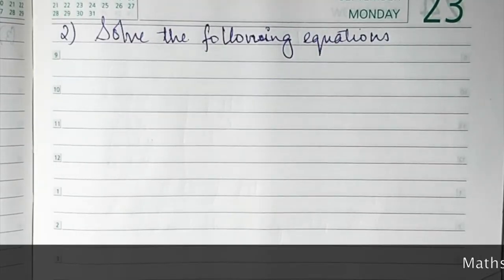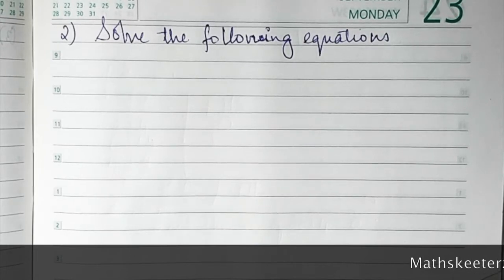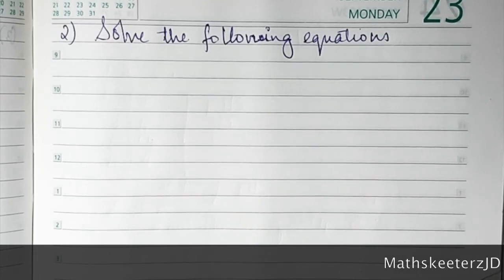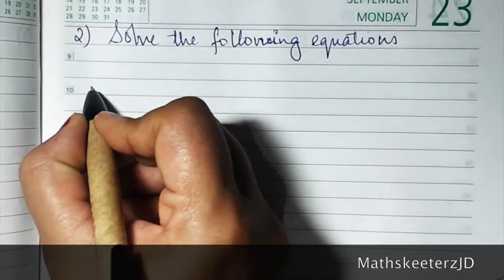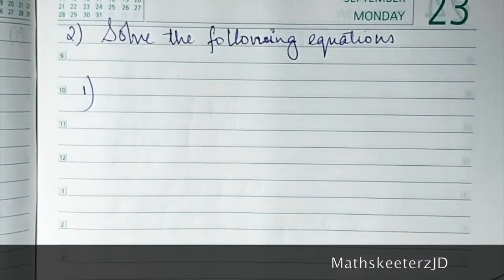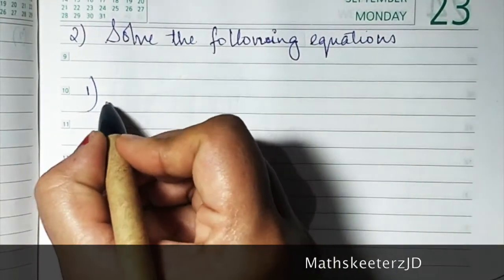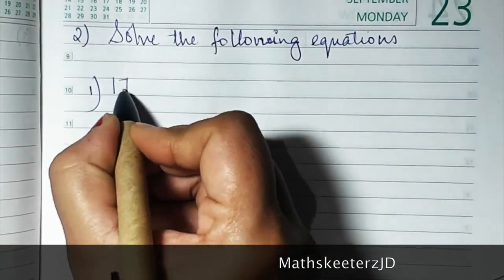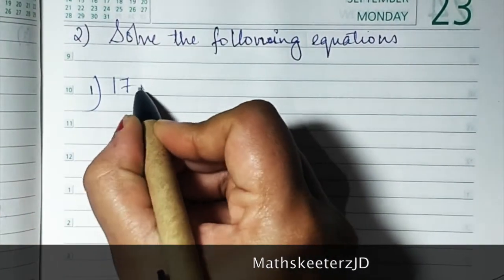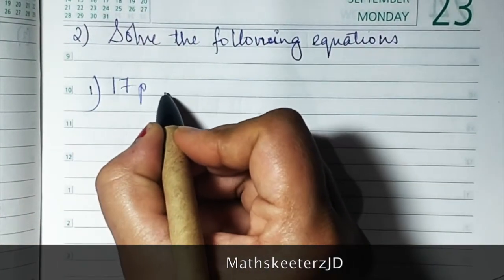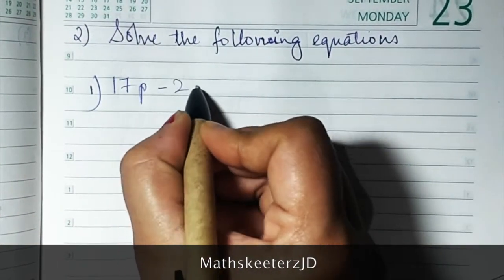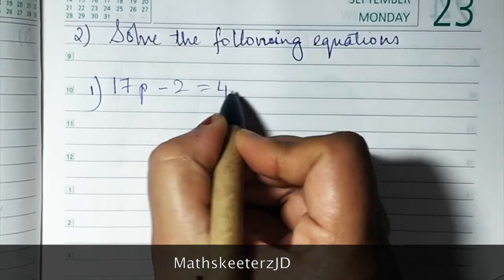Now we will do part 2 of exercise 12.1 — solve the following equation. The first equation is 17p minus 2 is equal to 49.